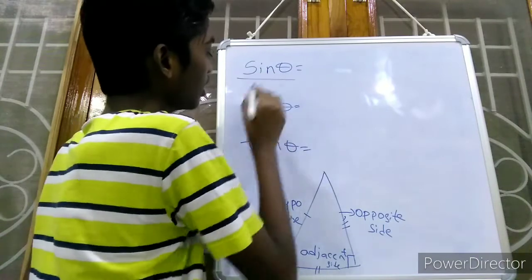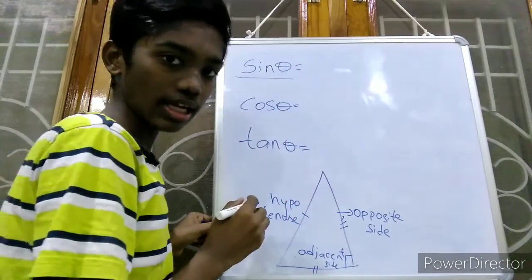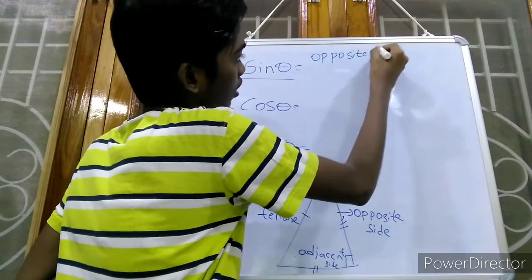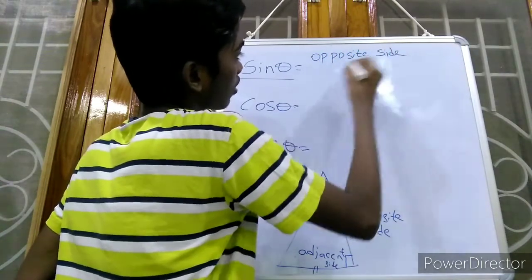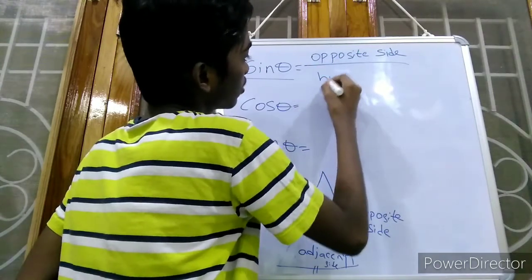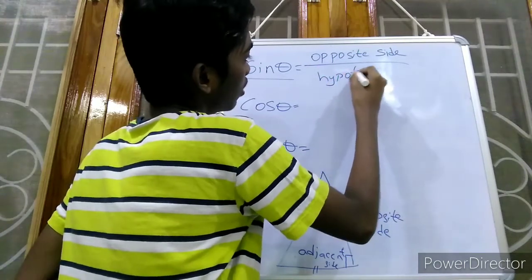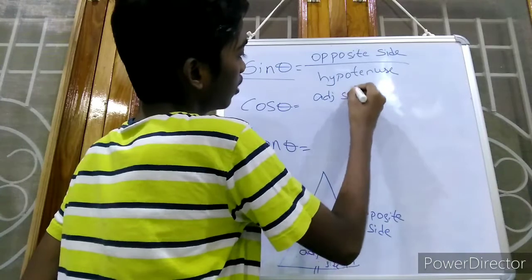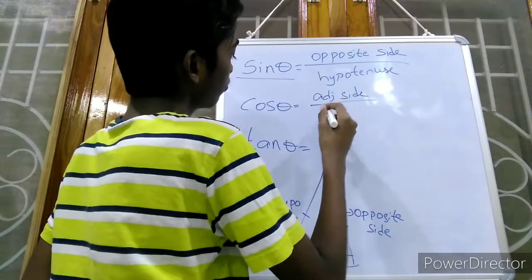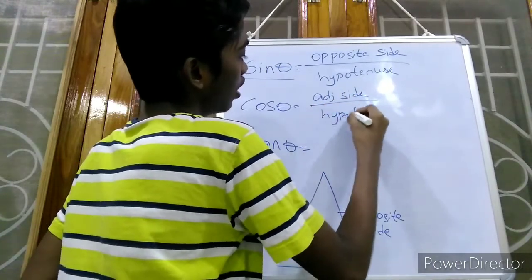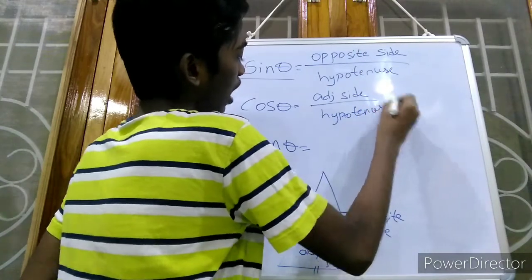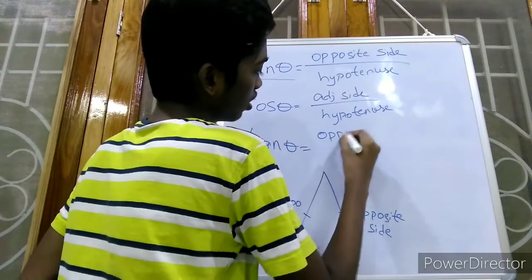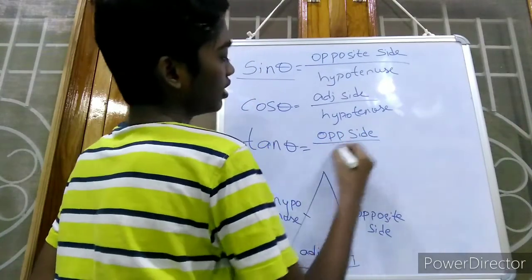Coming to sine theta, the formula for sine theta is opposite side by hypotenuse. The formula for cos theta is adjacent side by hypotenuse. And the formula for tan theta is opposite side by adjacent side.